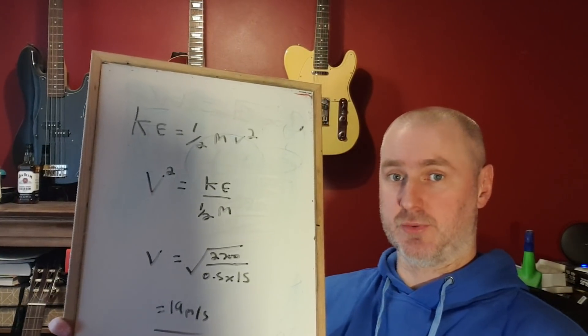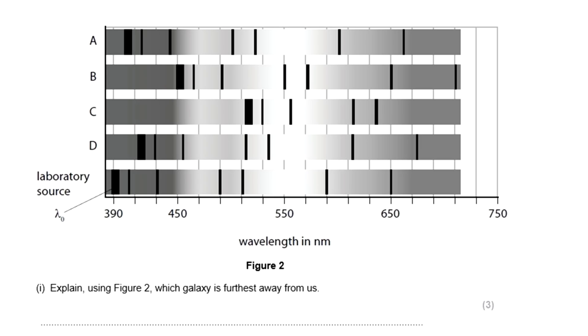Let's get on to question two. Question two comes from the astronomy part of the physics GCSE. Here we see absorption spectrum from four different galaxies, and we are simply asked which one of those galaxies A, B, C or D is furthest away from us. It does say explain, so you're going to have to back up your answer with some logic. You should pause it now.